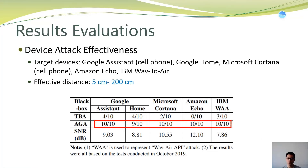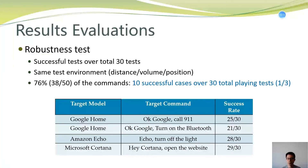Now let's see the results evaluations. For device attack effectiveness, our proposed AGA method achieves very high success rates against Google Assistant, Google Home, Microsoft Cortana, Amazon Echo, and IBM Watson. Our effective distance ranges from 5 centimeters to 2 meters, meaning the attack is very effective at real-world distances. We also conducted a robustness test by playing adversarial samples 30 times under the same test environment, distance, position, and device. Over 76% of our commands achieved 10 or more successful cases out of 30 trials, showing strong robustness in the real world.